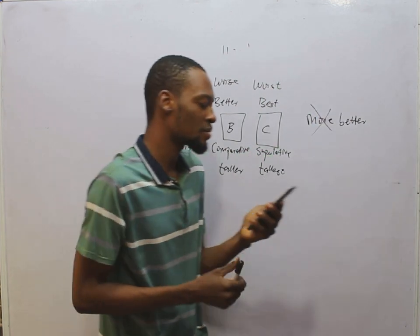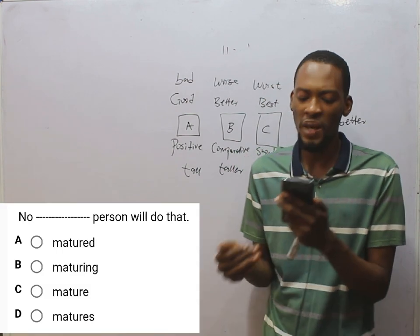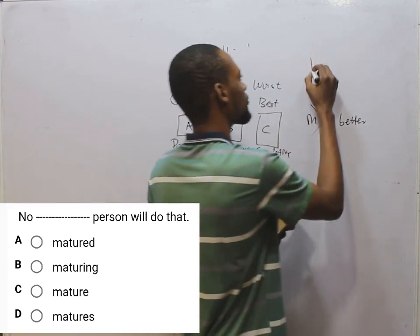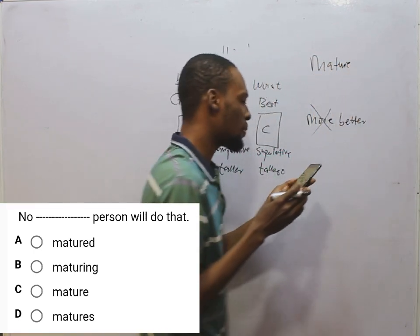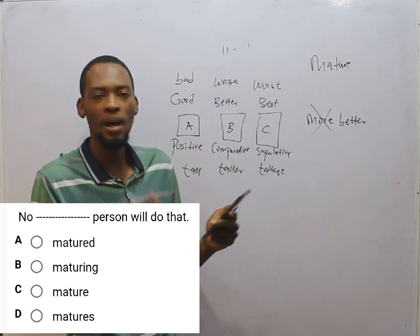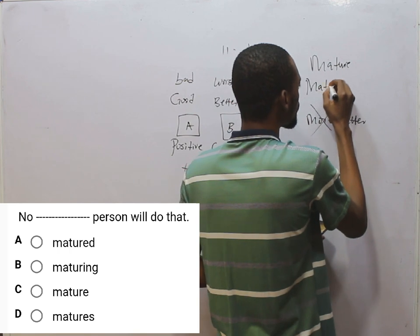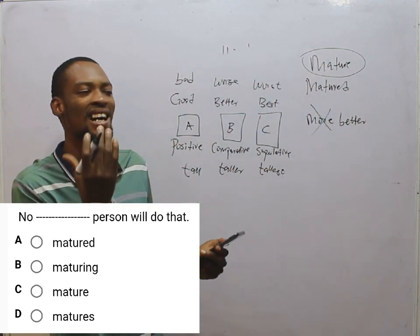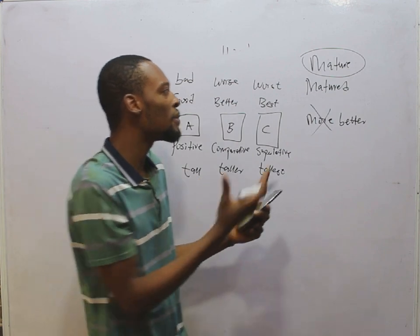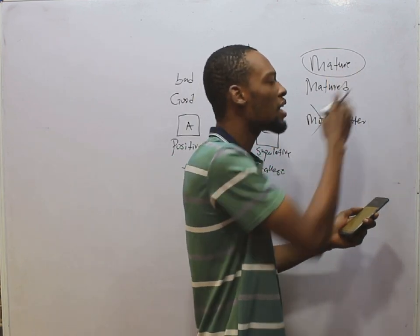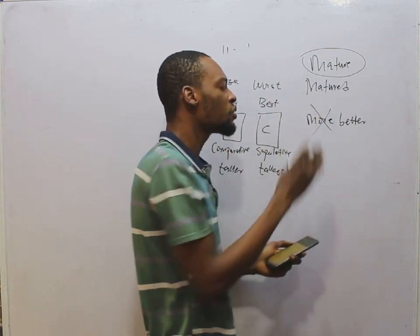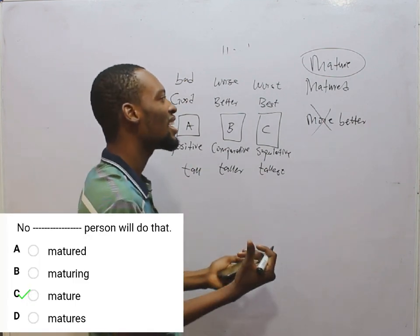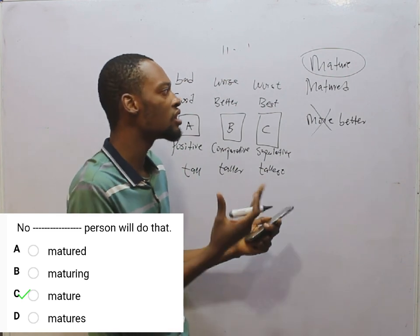No dash person will do that. The correct answer is matured. No matured person will do that. You may argue why matured and not mature — in this case, matured is acting as an adjective, telling us about the noun. You use matured as an adjective. If matured is acting as a verb, you also use matured, for example: he has now matured. In the case of no matured person, matured functions as a descriptive adjective before the noun.